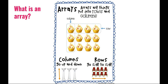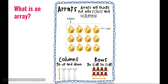What is an array? Arrays are things put into rows and columns. Look at my array of cupcakes. Let's first look at the rows. Rows go side to side, just like rows of chairs. So we have one row, two rows, and three rows of cupcakes.